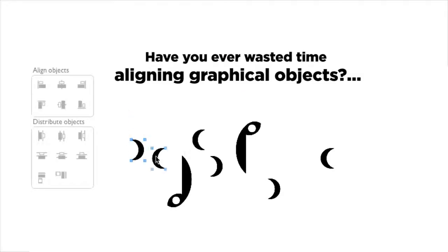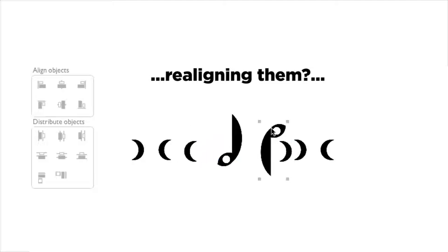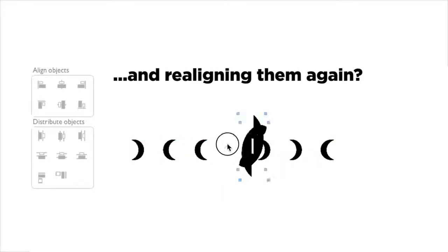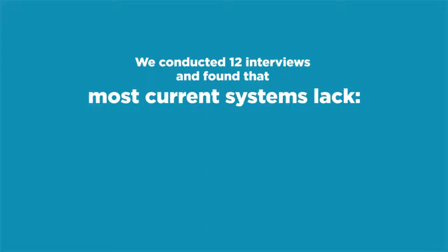Have you ever wasted time aligning graphical objects, realigning them, and realigning them again? Our first study showed that most systems lack persistence, control, and generalization.